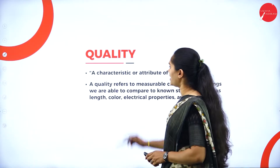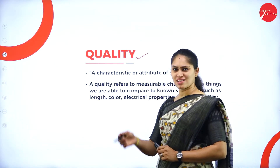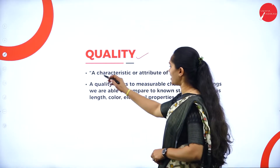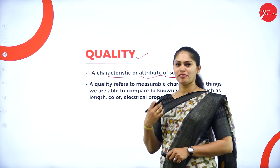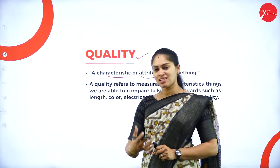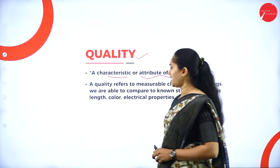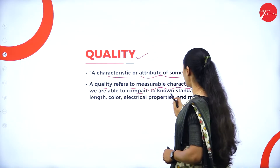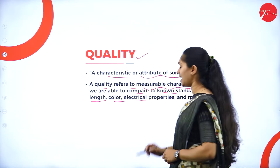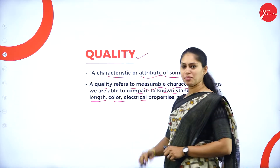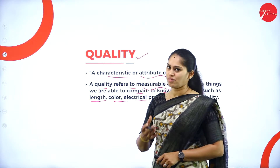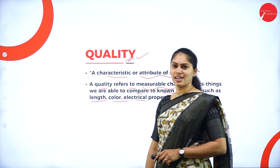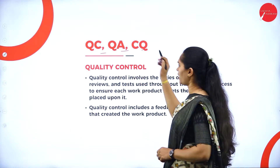We will see the next concept regarding quality. What do you mean by quality? If you consider any product, project, or software, we always are fond of quality. It is a characteristic or attribute of something. If I wanted to say something is qualitative, then with certain parameters or attributes, we are going to measure it. Quality refers to measurable characteristics — for example, it can be compared with known standards like length, colour, or electrical properties. By having all these parameters or attributes or characteristics, we are measuring something — that will be considered as quality. Then how are we going to measure software quality? With the help of certain standards. Next we will see QC, QA, and CQ.